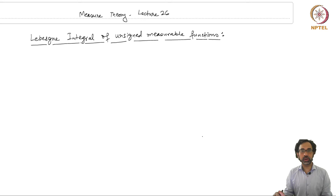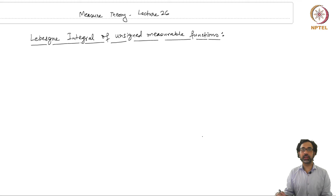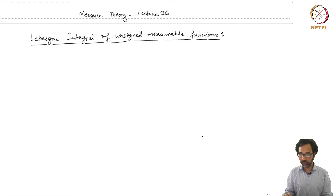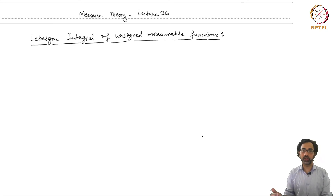Now we come to one of the most important concepts in measure theory, which is that of the Lebesgue integral of an unsigned measurable function. As I have said before, Lebesgue developed the theory of measures and integrals so that one could have an advantage over Riemann integration and which could be applied to arbitrary sets as well. In this lecture, we will look at the definition of the Lebesgue integral for unsigned measurable functions and then generalize this definition first to real-valued functions and then to complex-valued measurable functions.